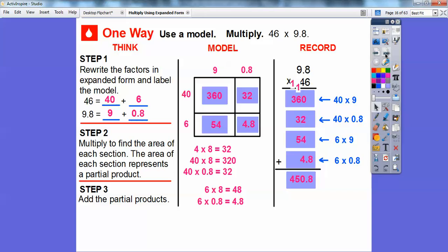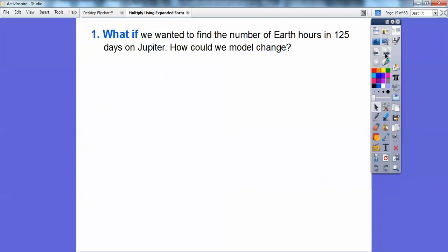Let's always answer the question right here. So there are 450.8 Earth hours in 46 days on Jupiter.